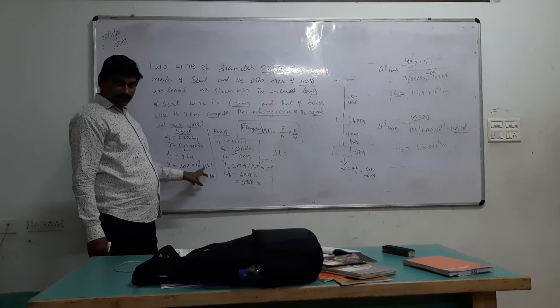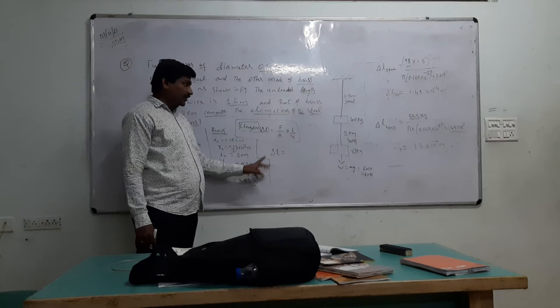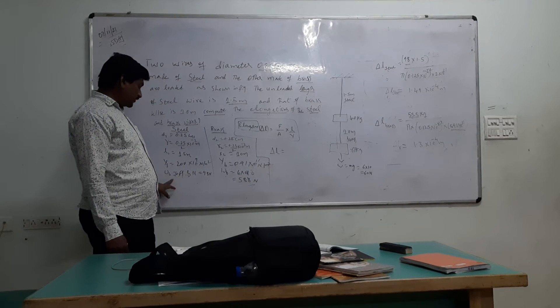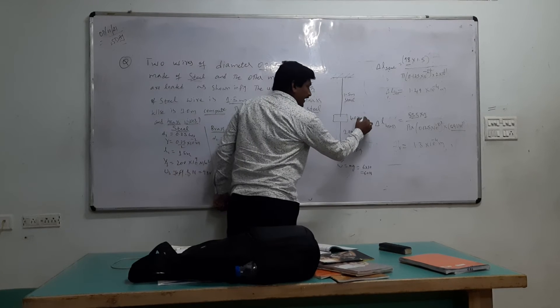Young's modulus for steel is 200 into 10^9 newtons per meter square. For brass is 0.91 into 10^9 newtons per meter square. So weight we need to calculate by multiplication with 9.8.